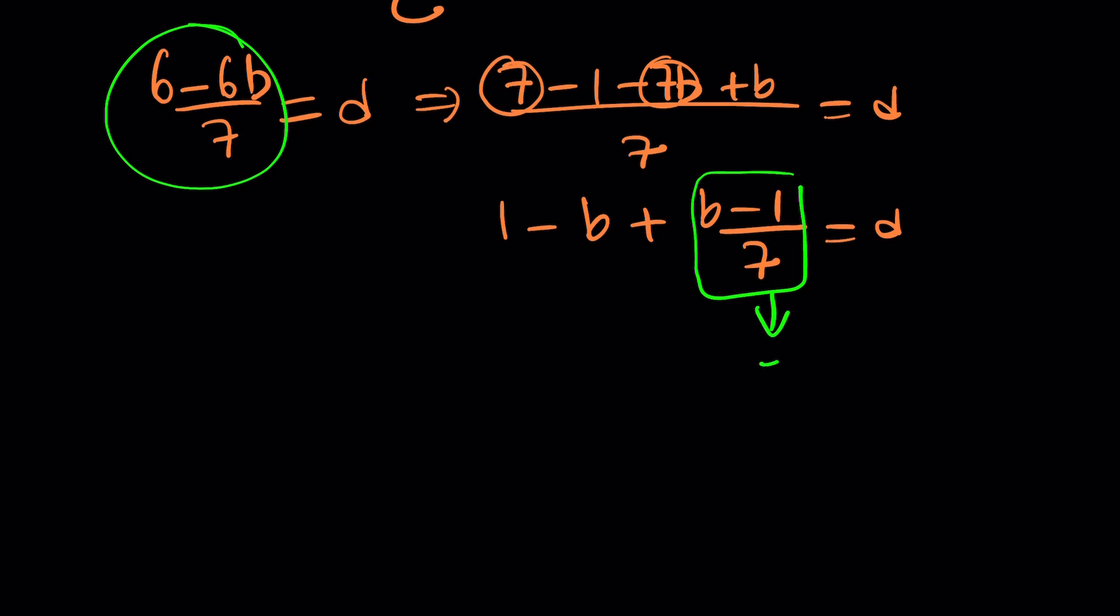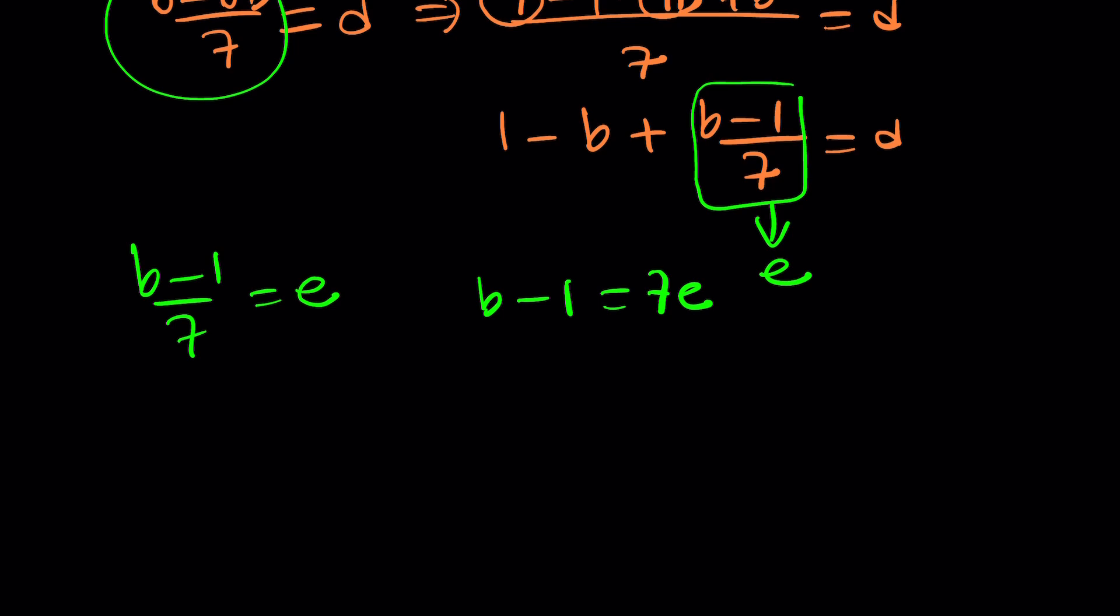You can call it E. And now, B minus 1 over 7 is an integer, which means B minus 1 is divisible by 7. It means B minus 1 can be written as 7E, or we could call this K. K makes more sense in this case. And then from here, we get B equals 7K plus 1.